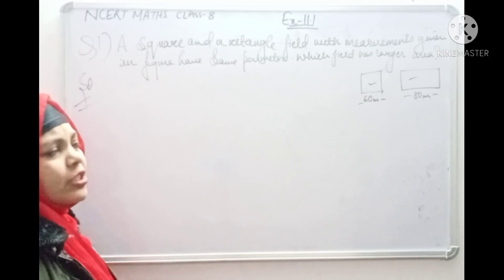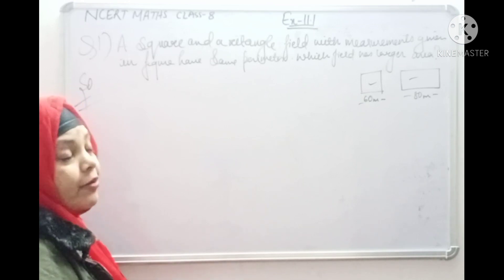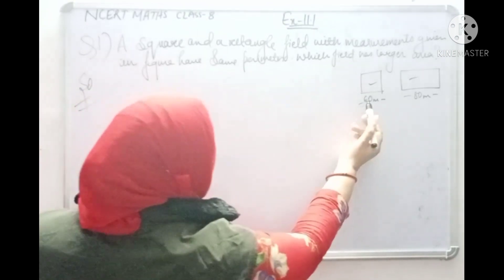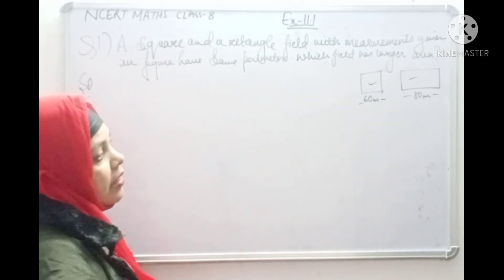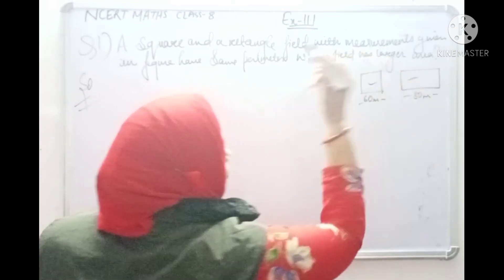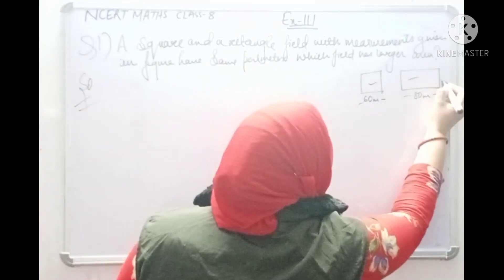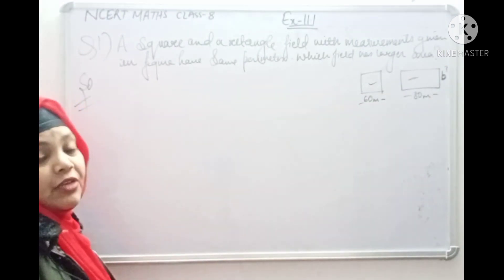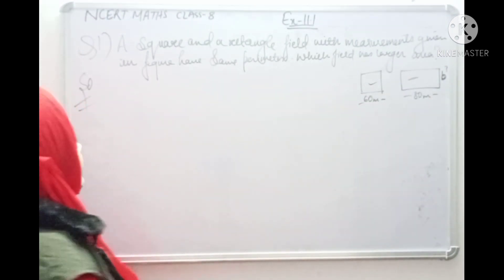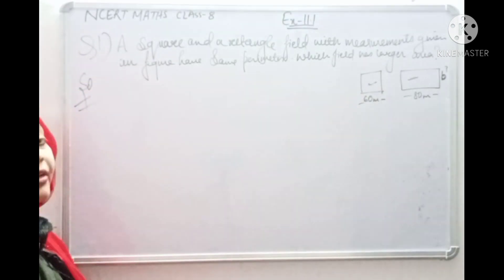To find the area, we need length and breadth. We don't have breadth yet, so we can't find it directly. To find the area, we need length into breadth — so we need to find breadth first.